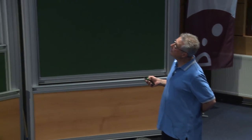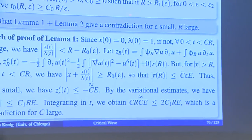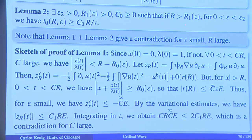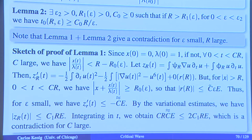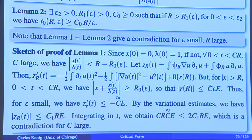The second lemma says that for epsilon small and R large, t0 has to be bounded from below by R over epsilon. So the first lemma gave a bound from above, and the second gives a bound from below. The bound from below and the bound from above are not compatible for epsilon going to zero, and that's why we get a contradiction — that's why no such function can exist.